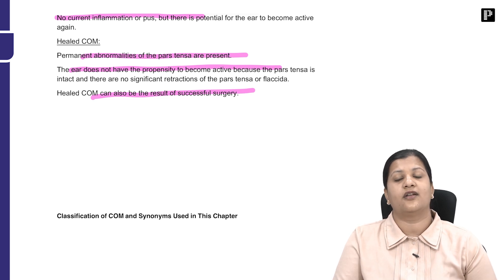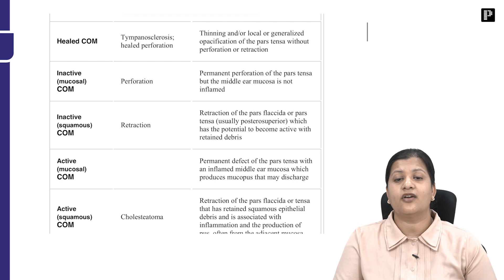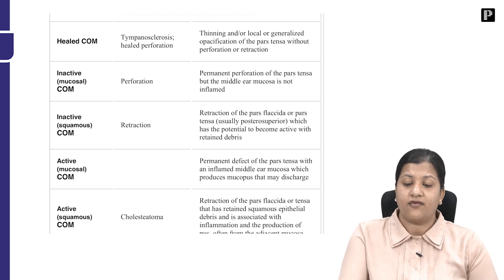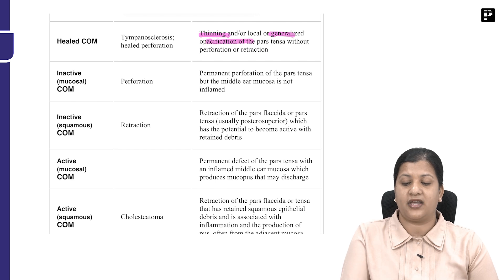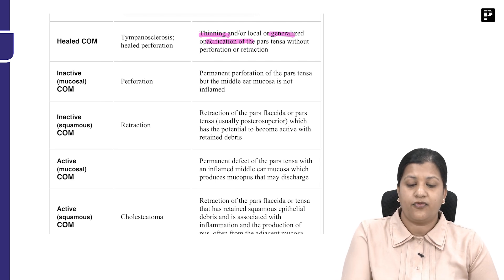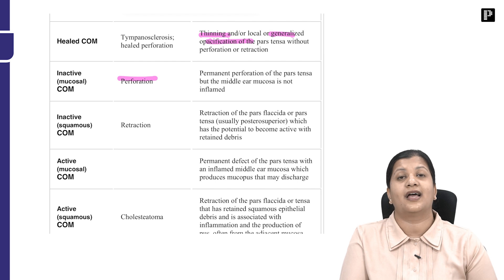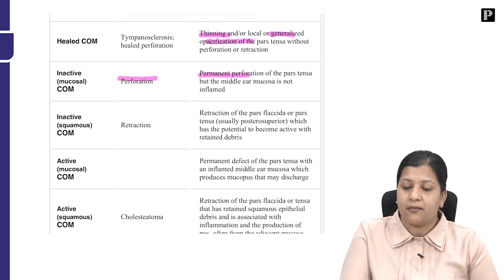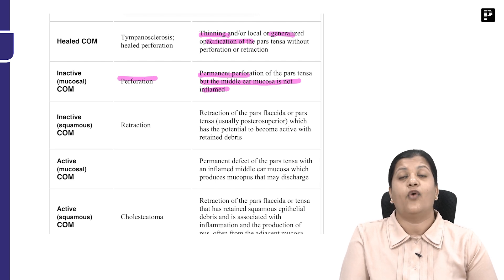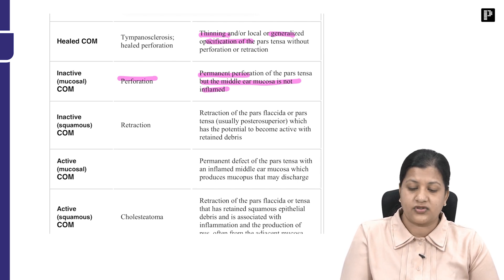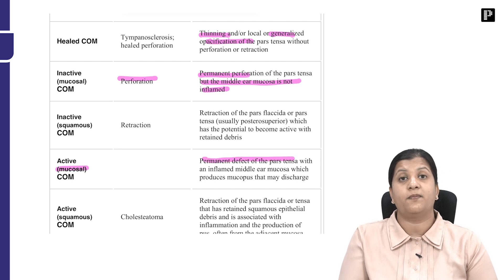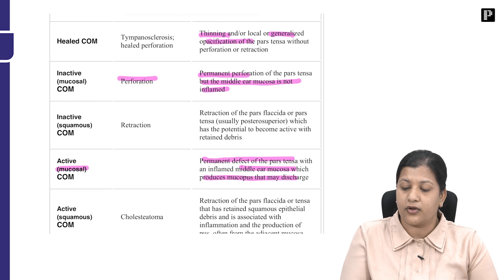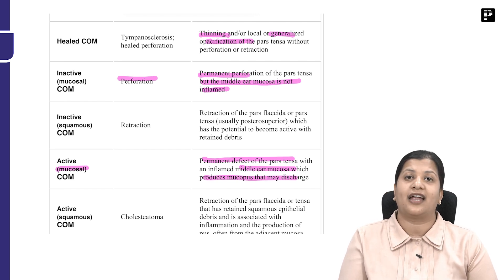The five important classifications of chronic otitis media are: first, healed COM or tympanosclerosis — thinning or generalized opacification of the pars tensa without perforation or retraction. Second, inactive mucosal disease — a permanent perforation but the middle ear mucosa is not inflamed, no ongoing inflammation, no pus. Third, active mucosal disease — a permanent defect of the pars tensa where the middle ear mucosa produces mucopus and discharge.